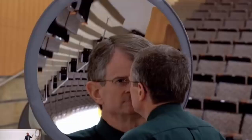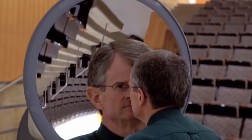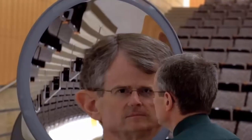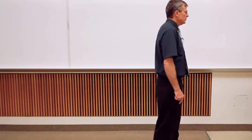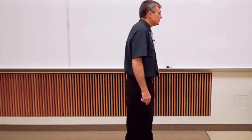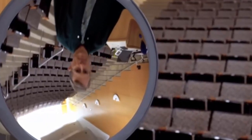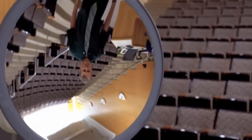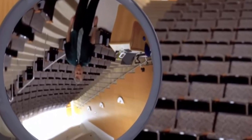Dr. Boyd Edwards demonstrates what happens as you move away from a concave mirror. The image is enlarged and gets bigger as he approaches the focal point. At the focal point the image goes to infinity, then it flips upside down as he passes it. The image is now inverted and enlarged. As he moves toward the center of curvature the image gets smaller, and when he's at the center of curvature the image and object are the same size. Moving beyond C, the image continues to get smaller.